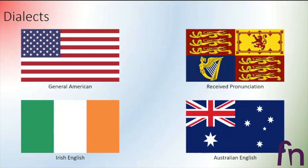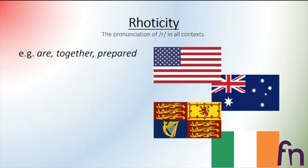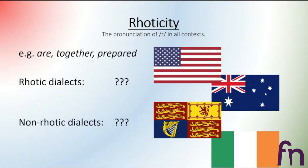The first feature we are going to discuss is rhoticity, which can be defined as the pronunciation of the R sound in all contexts — in words such as 'R', 'together', 'prepared'. When pronounced this way, we can hear the R. We can divide the dialects into two groups: the rhotic dialects, which pronounce the R sound in all contexts, and the non-rhotic dialects, which pronounce the R only before vowels.